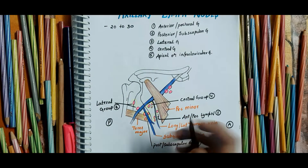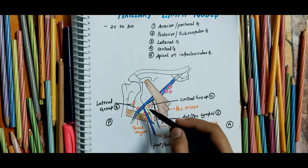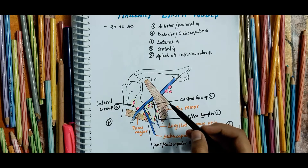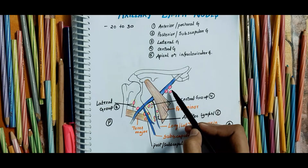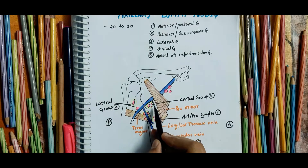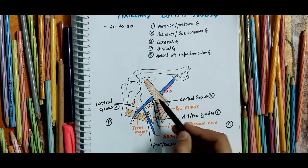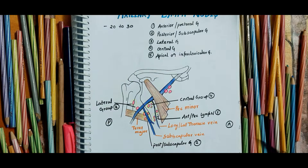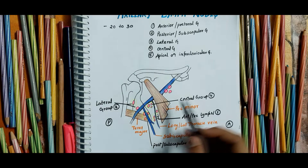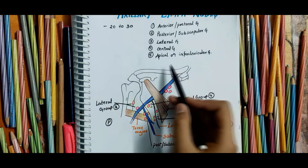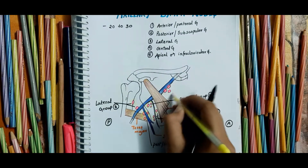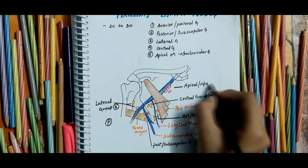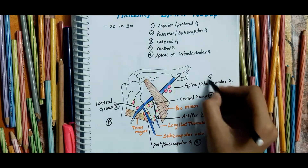Now coming to the central group. These lie most centrally and are situated in the upper part of the axillary fossa. They receive lymph from the other groups and drain into the apical group. The intercostal brachial nerve passes amongst these nodes, so cancer of these nodes may cause compression of the nerve, causing pain along the inner border of the arm.